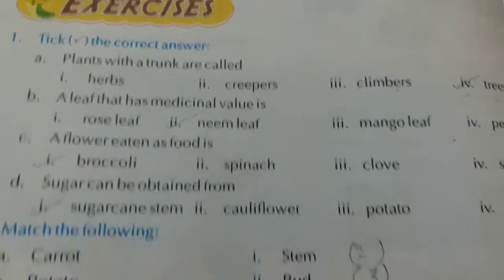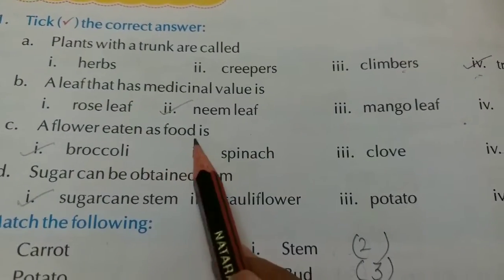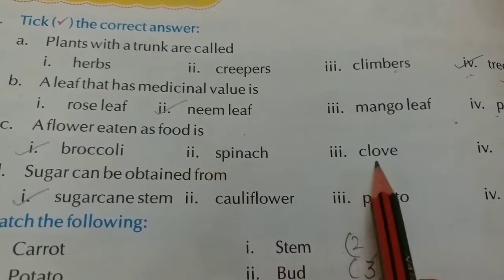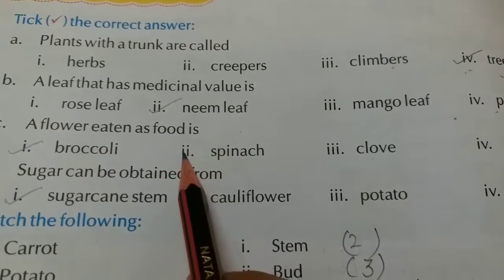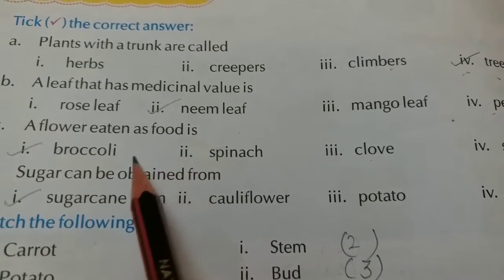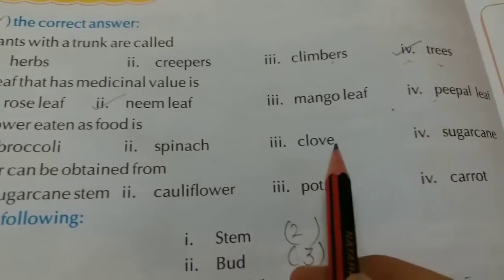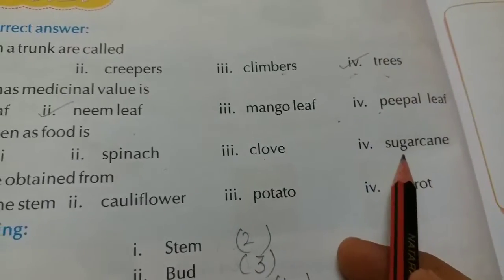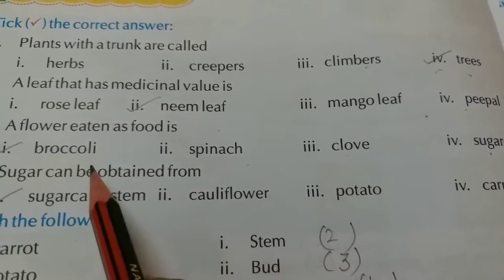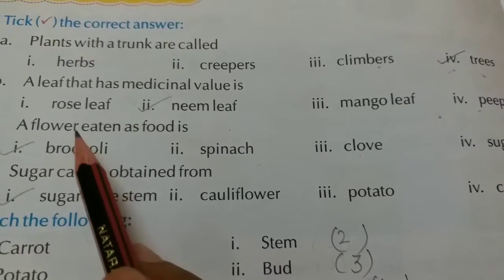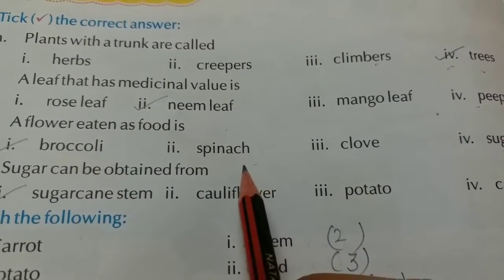The third question is — a flower eaten as food is dash. Which flower do we eat as food? Options are broccoli, spinach, clove, and sugarcane. The answer is broccoli. Broccoli is a flower.